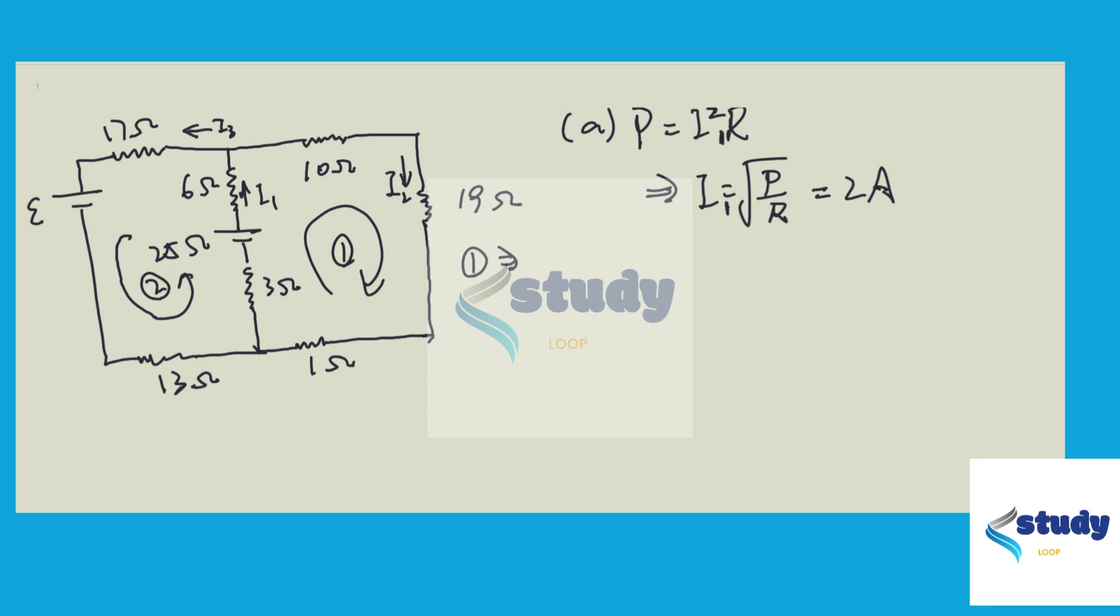we have negative 2 times 3 here, minus 2 times 6 here, plus 25 volts, that's this battery, minus I2 times 10 plus 19 plus 1, so all these three resistors together, equal to zero. So we have I2 equal 0.233 amperes.